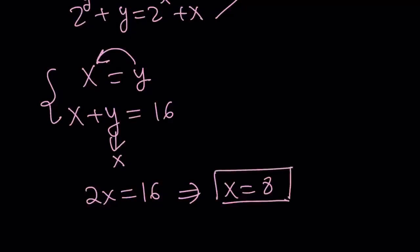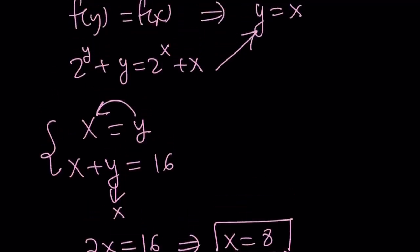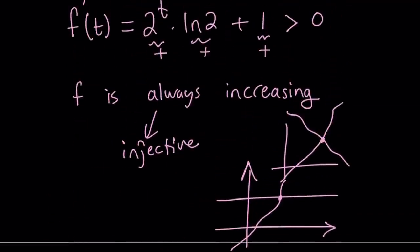And since x and y are equal, this implies y equals 8. So, the solution is going to be 8, 8 if you want to write it as an ordered pair. Okay, great. So, could we use elimination? Well, pretty much elimination and substitution are very similar here. But that's the whole idea.